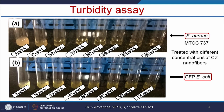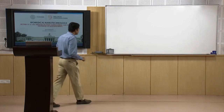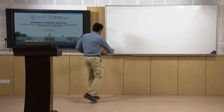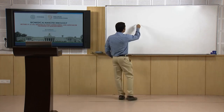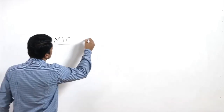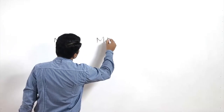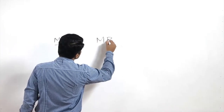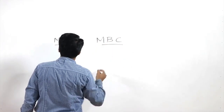Using this visual turbidity assay, we can easily identify the minimal inhibitory concentration as well as minimal killing concentration or minimal bactericidal concentration. I will explain how to determine the minimal inhibitory concentration and minimal killing concentration or minimal bactericidal concentration.